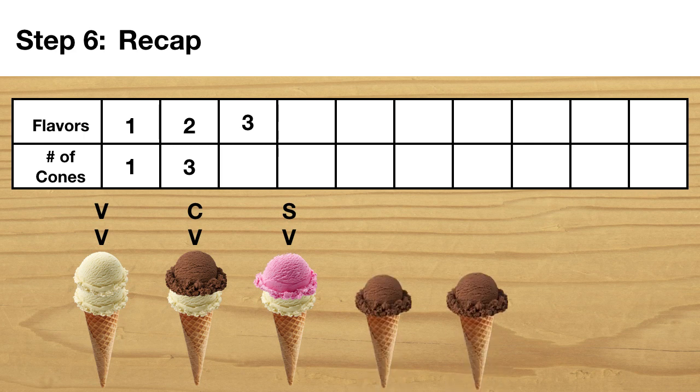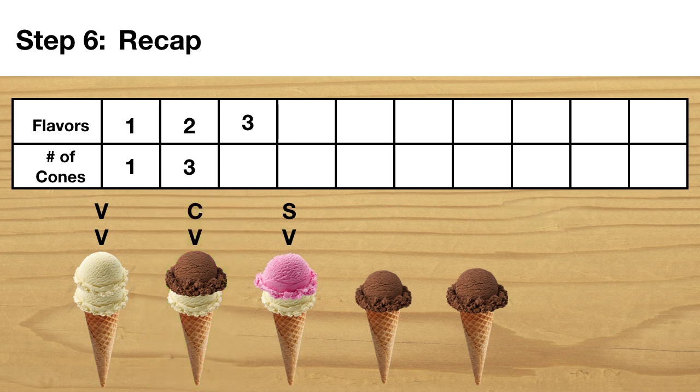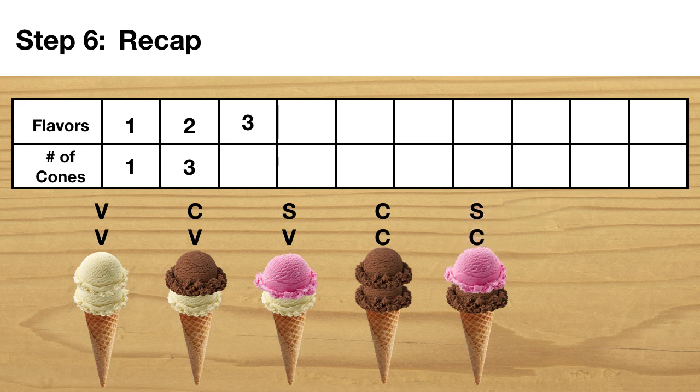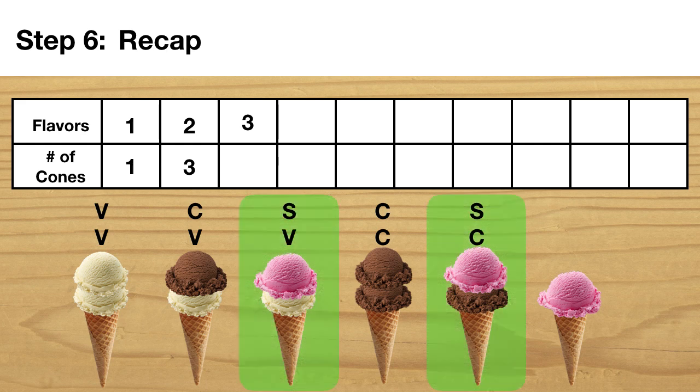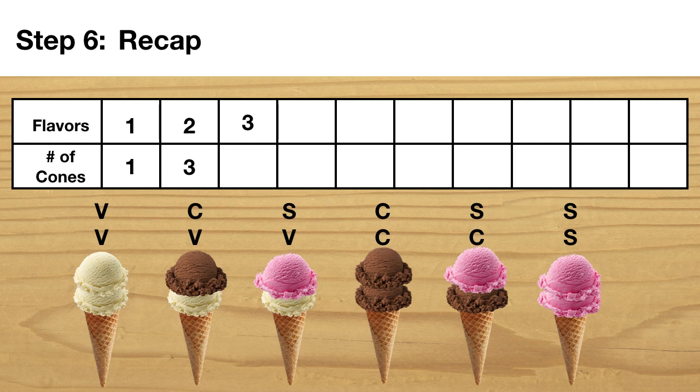So then I moved on to chocolate. I already had vanilla and chocolate together, so I can't do that one again. But I could do chocolate chocolate and chocolate strawberry. Now that's all for chocolate, so I moved on to strawberry on the bottom. I already had strawberry with vanilla and with chocolate, so the only combination left was strawberry strawberry. These are all of the possible cones I could make with three flavors. So three flavors gives me six cones.